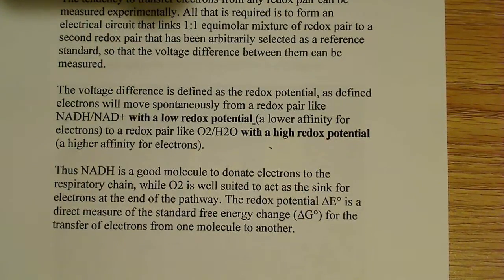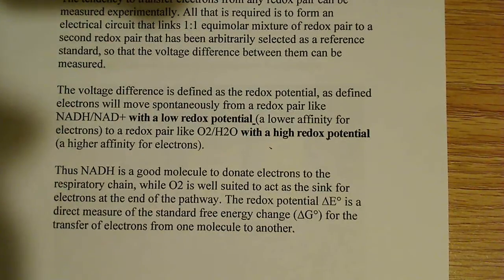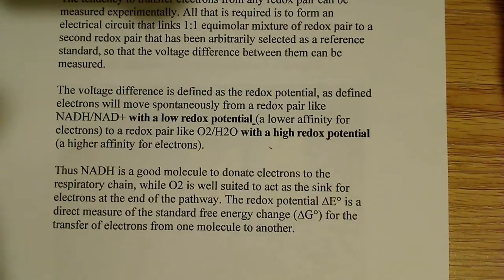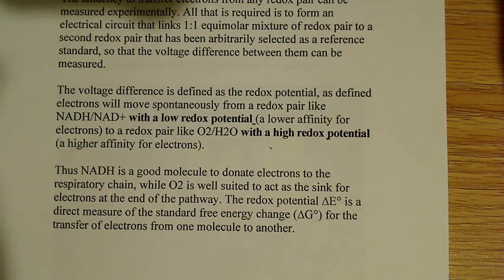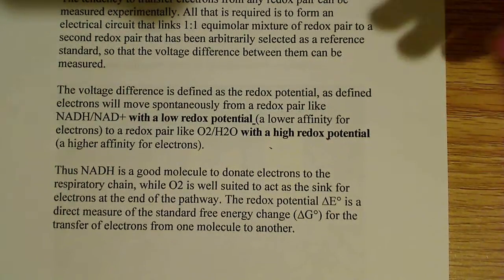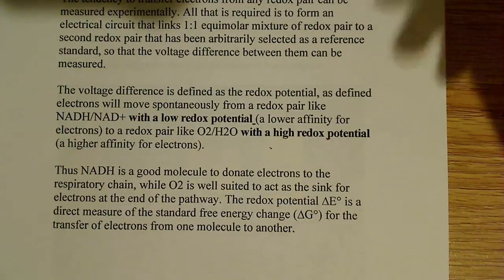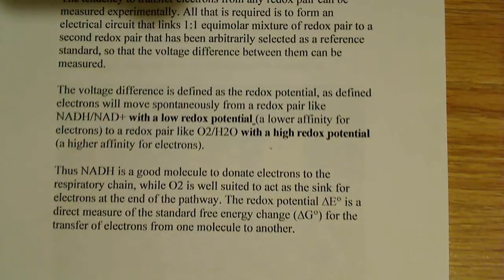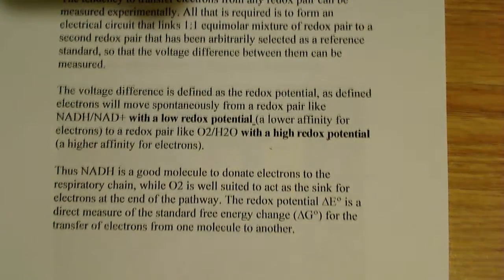As defined, electrons will move spontaneously from a redox pair like NADH/NAD+ with a low redox potential. A low redox potential means a low affinity for electrons — that's important to remember. If you have a low, negative redox potential, you easily give those electrons up; you want to donate the electrons.